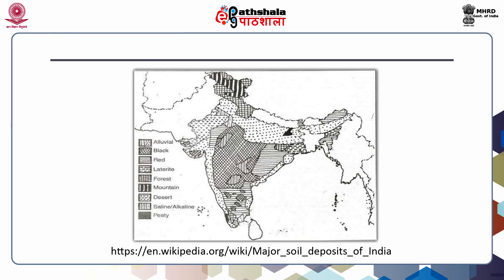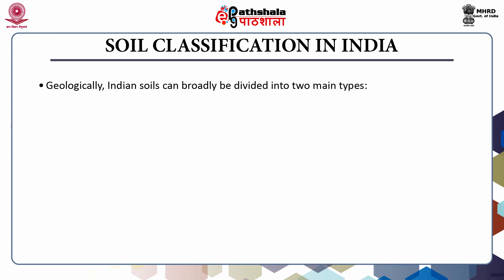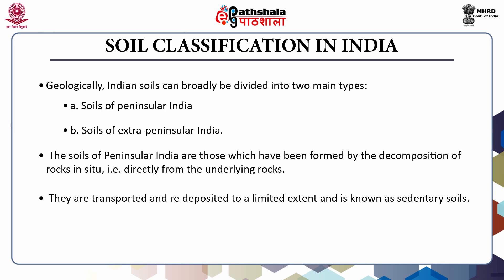There is a slide showing the map of India where the eight different soils have been shown. The soil classification in India — geologically, Indian soils can broadly be divided into two main types: soils of peninsular India and soils of extra peninsular India. The soils of peninsular India are those which have been formed by the decomposition of rocks in situ, that is directly from the underlying rocks. They are transported and redeposited to a limited extent and are known as sedentary soils.